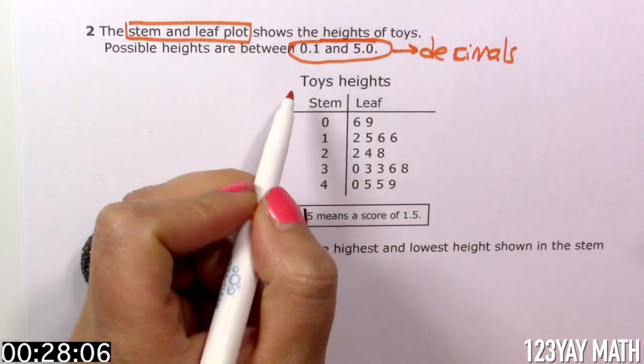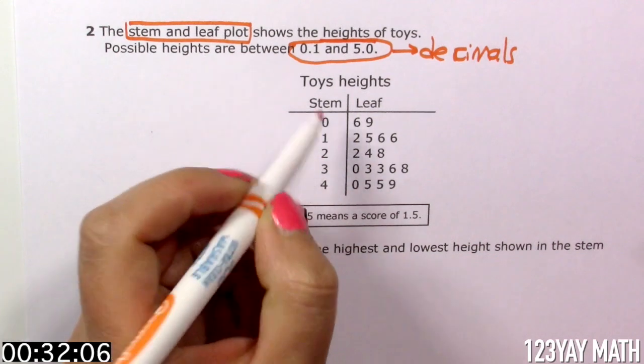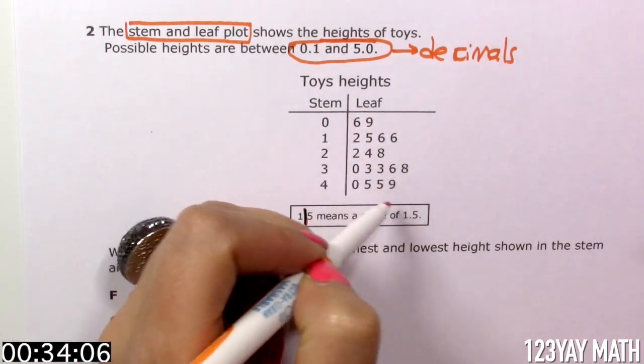Let's look at the stem and leaf plot. We see toys height, stems 0, 1, 2, 3, 4, and leaf. It has a lot of leaves. And here is the key.